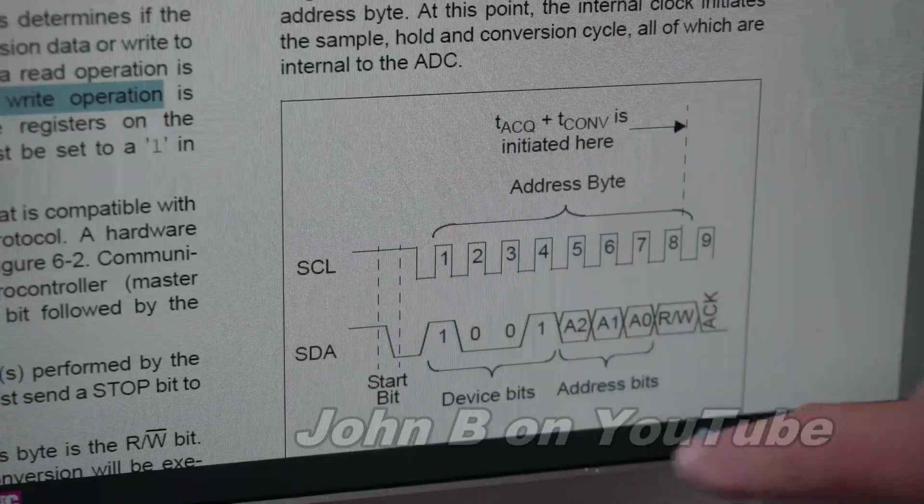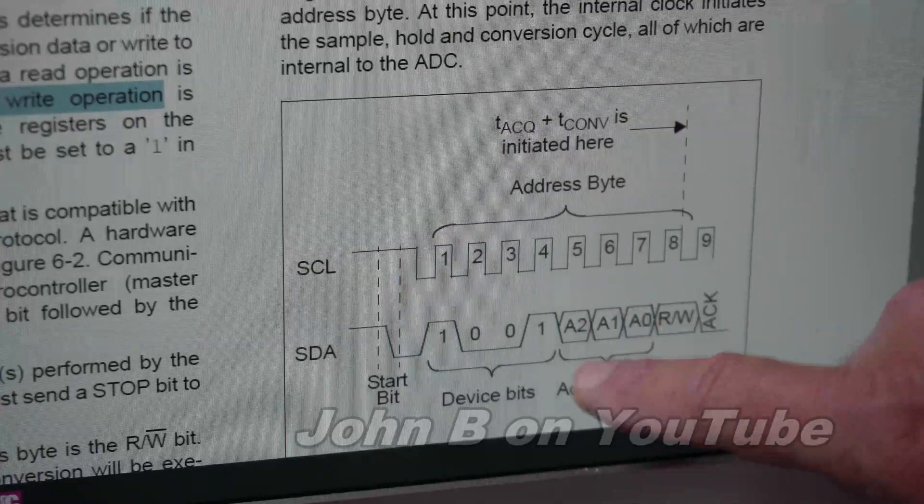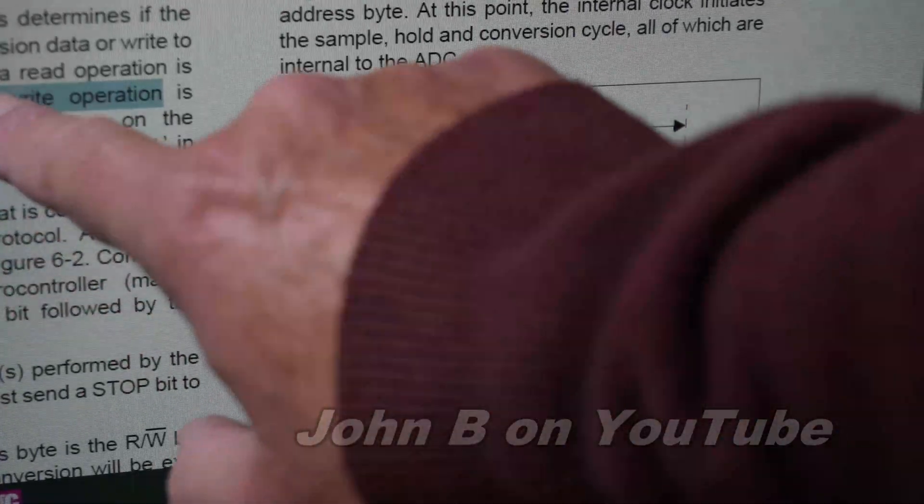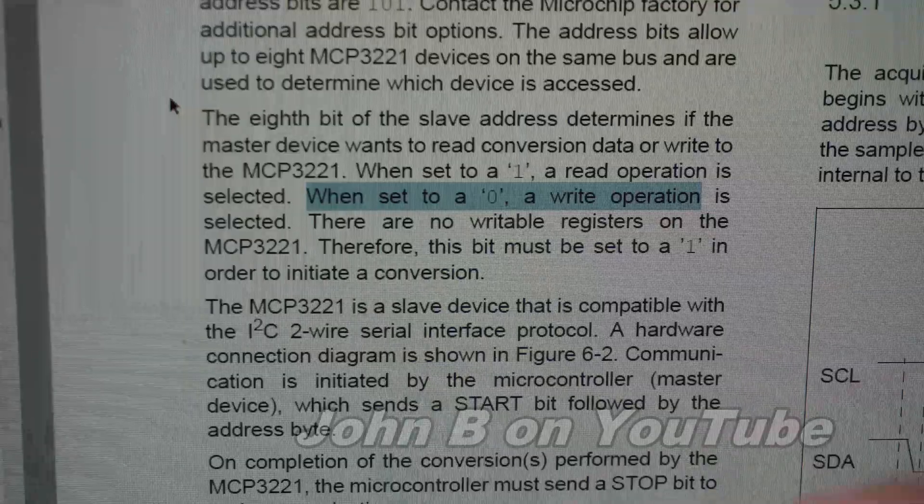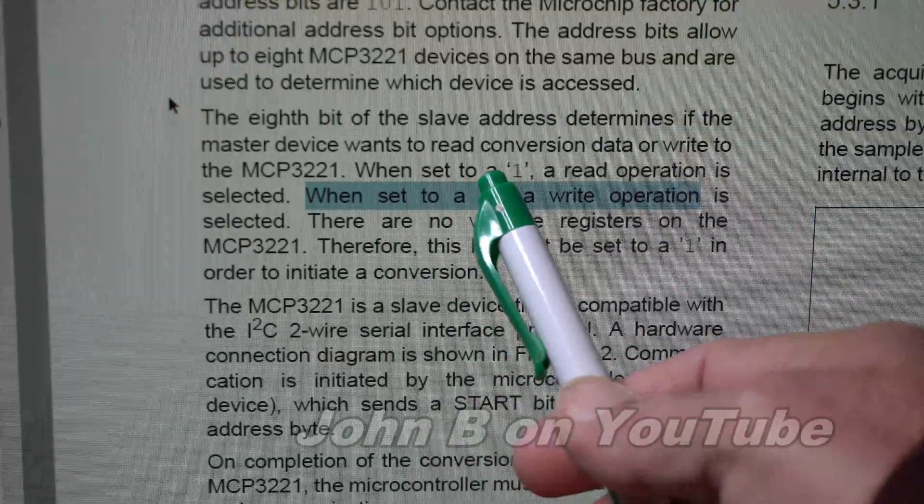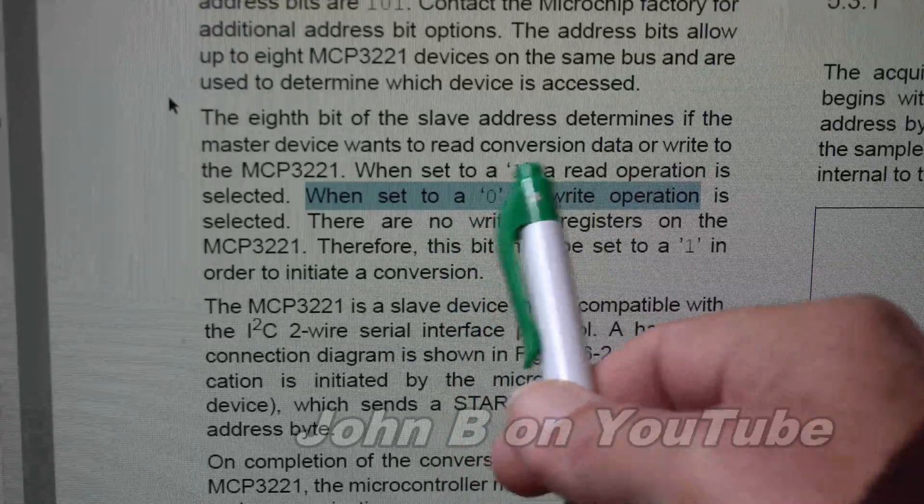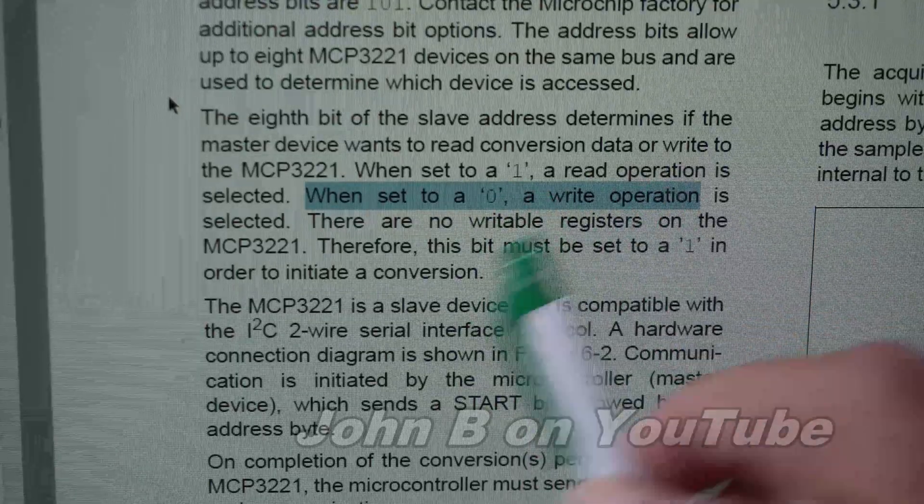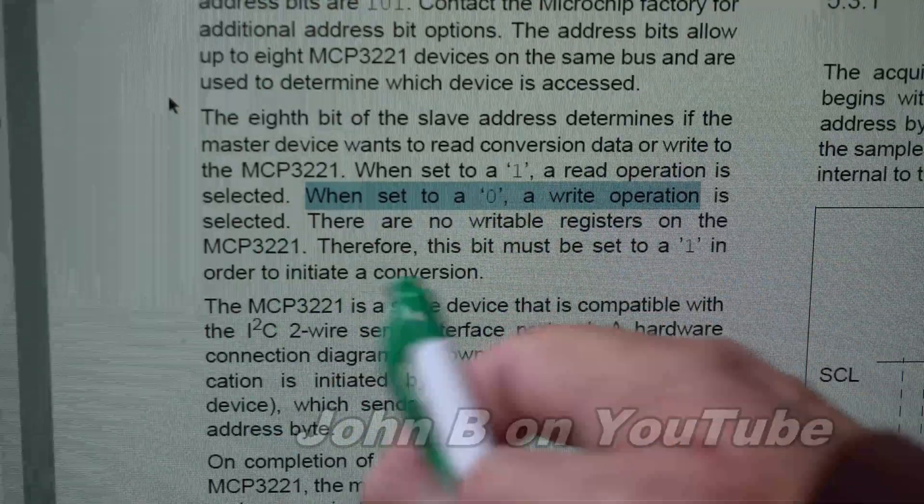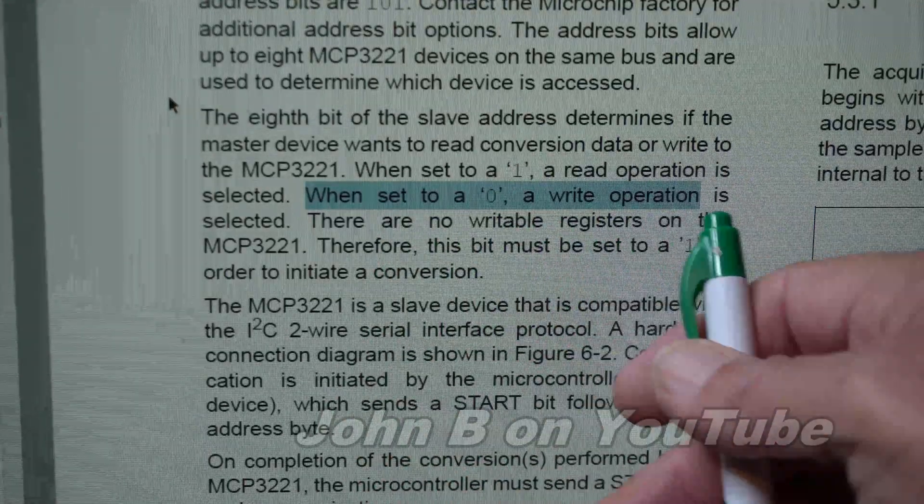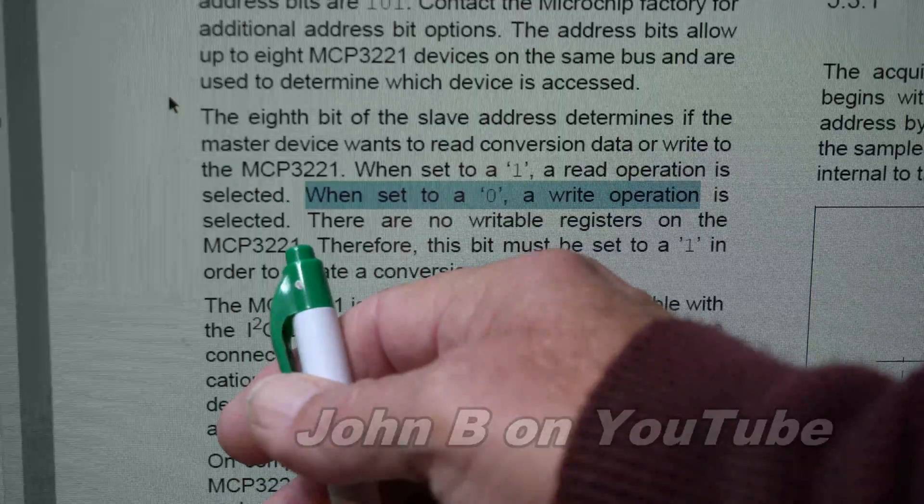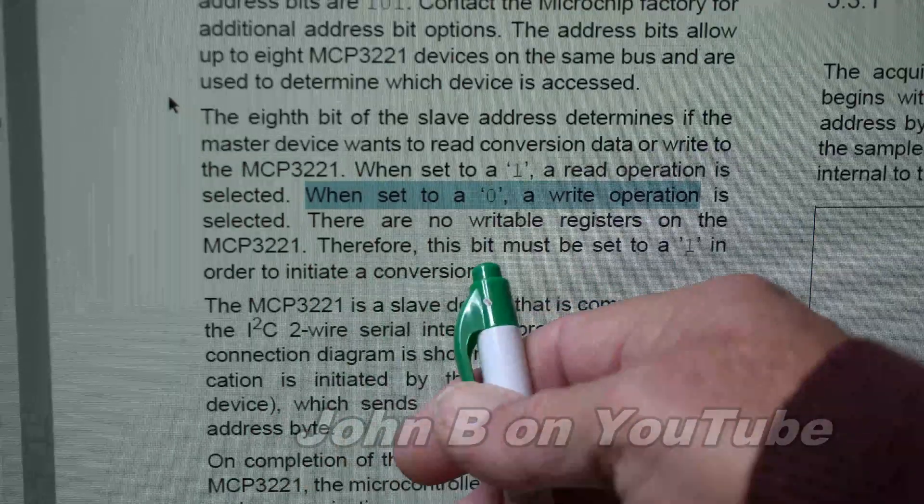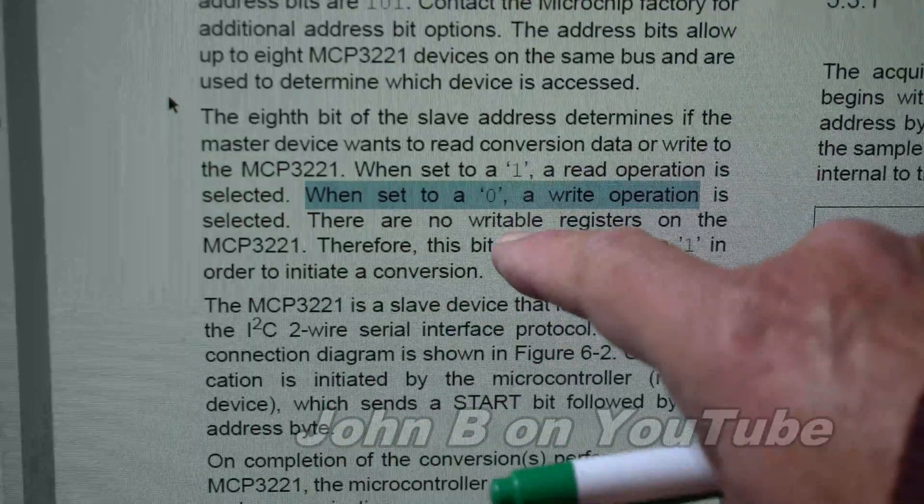And the read/write there. And it says here, what's wrong? Sounds great so far, doesn't it? When set to one, so when the read/write is set to a one, a read operation is selected. When set to a zero, a write operation is selected. That's normal, isn't it? There are no writable registers on the MCP3221. Therefore, this bit must be set to a one in order to initiate a conversion. What? No writable registers? Well, how do I change the address then? And my heart sunk.